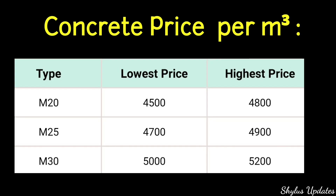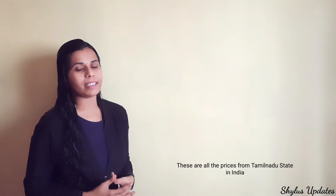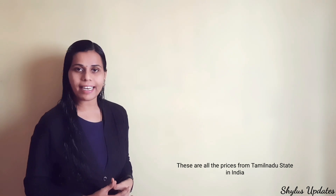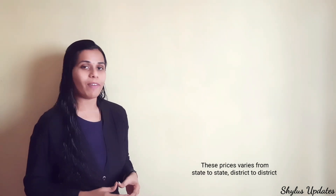Price list of concrete per cubic meter. Type, lowest price, highest price. M20 concrete is from Rs.4,500 to Rs.4,800. M25 concrete is from Rs.4,700 to Rs.4,900. M30 is from Rs.5,000 to Rs.5,200.